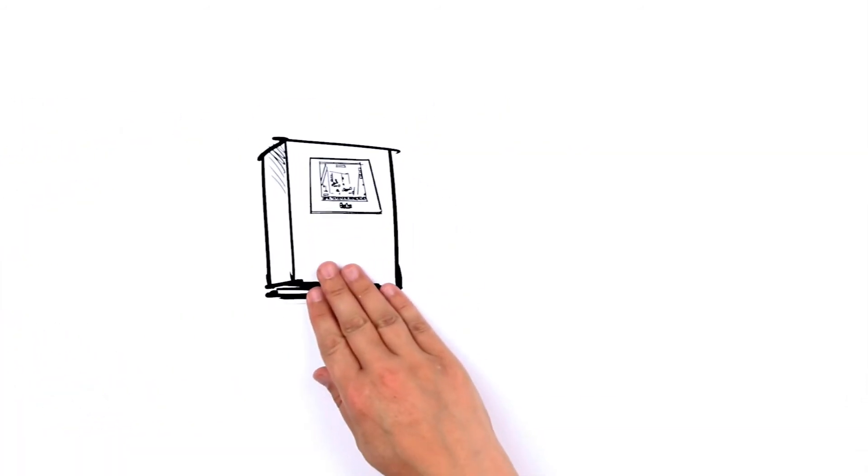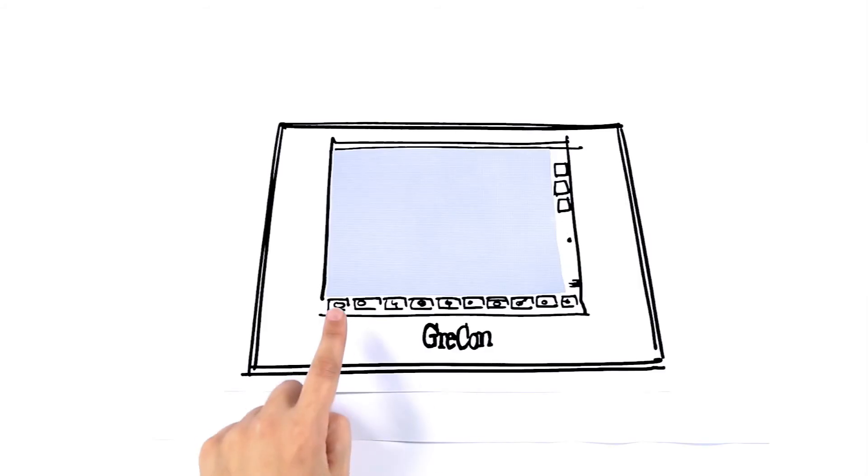The control console from GRECON is the core of the spark detection and extinguishing system. All information is gathered here. GRECON is the first company worldwide that offers spark detection and extinguishing systems with touch and slide operation.